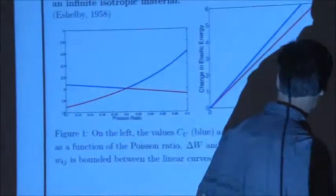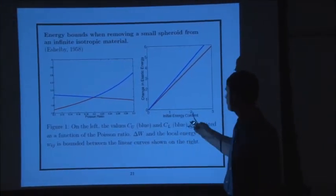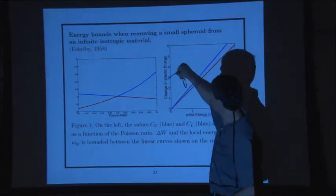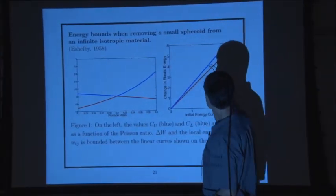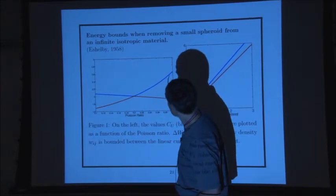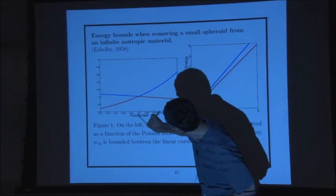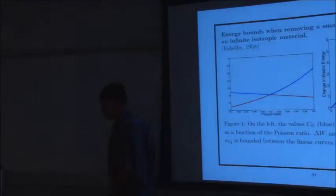What justification do we have for these upper and lower bounds? There's a wonderful paper by Eshelby in which he considered an isotropic elastic material and asked what the change in energy is if you remove a spherical object from that material. From his calculation you can show there are upper and lower bounds — these are mathematically like a theorem. Interestingly, the difference between the bounds is a function of the Poisson ratio. For example, if you had a material with a Poisson ratio of about 0.2, the upper and lower bounds would be the same.